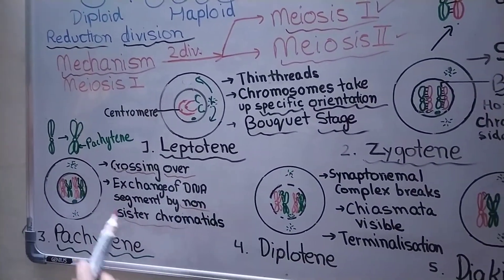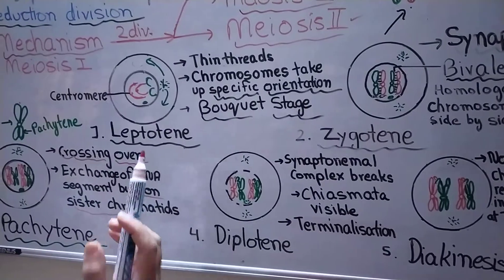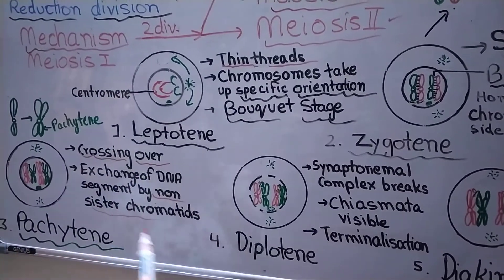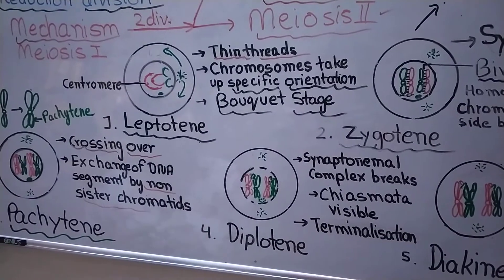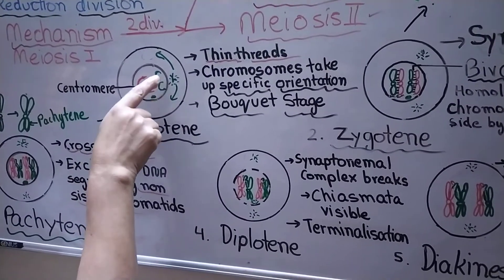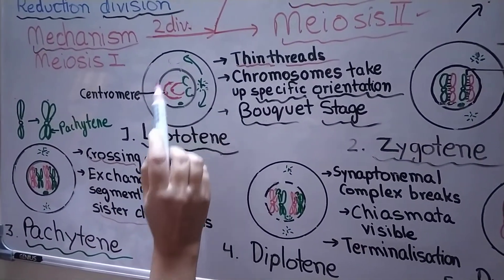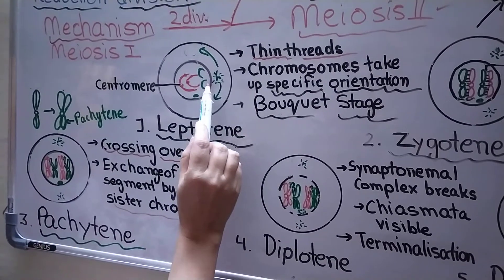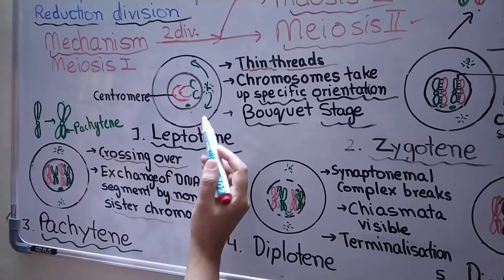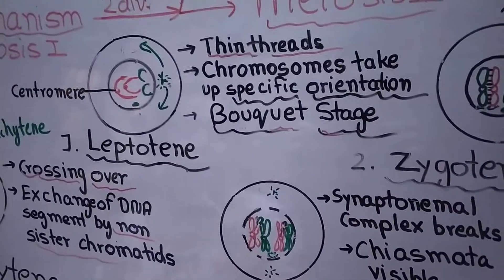So the first stage of meiosis one is leptotene. Leptotene means thin threads. In this stage, chromosomes take up a specific orientation — the ends of the chromosomes start moving towards the side of the nucleus where the centrosome is located, and they attach there. This stage looks like a bouquet — that's why this stage is also known as the bouquet stage.